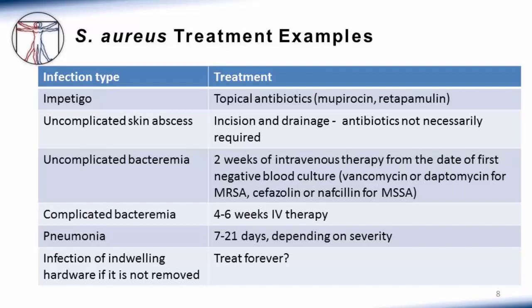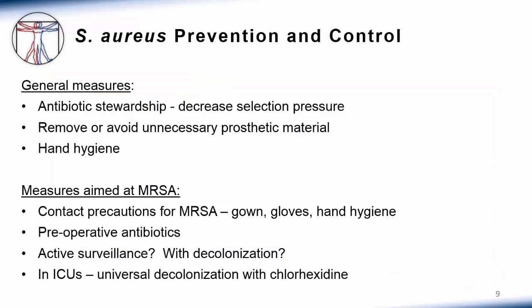For infected indwelling hardware — if you can't or don't remove it — continuing the example of a patient with staph aureus bacteremia that led to spinal hardware infection: if the hardware can't be removed, you would treat with a course of intravenous therapy and then in many cases put the patient on an oral suppressive antibiotic indefinitely, since eradication is impossible with hardware in place. The larger point is that curing staph aureus infection in infected hardware is a nearly impossible task without removing the hardware.